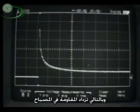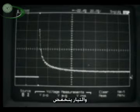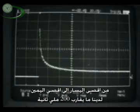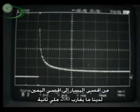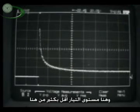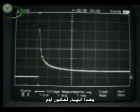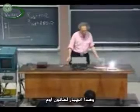And then the filament heats up. And so the resistance goes up, the light bulb, and the current just goes back again. From the far left to the far right on the screen is about two hundred milliseconds. That's about two tenths of a second. And here you get a current level which is way lower than what you get there. That's a breakdown of Ohm's law.